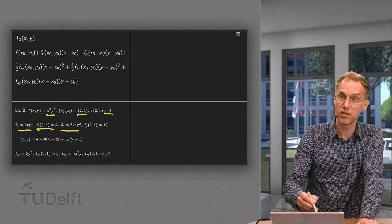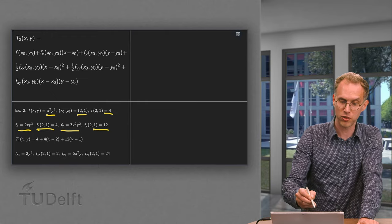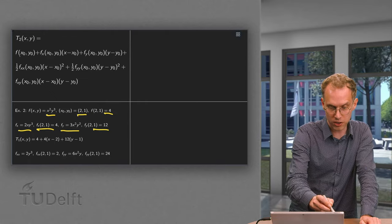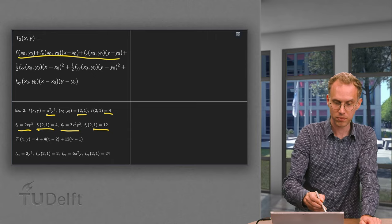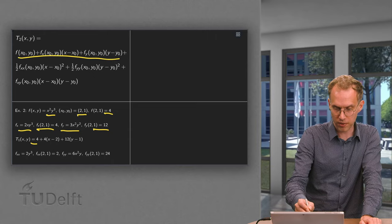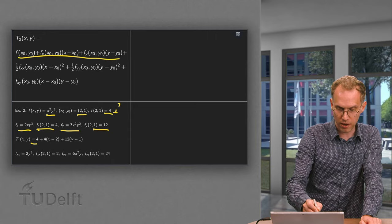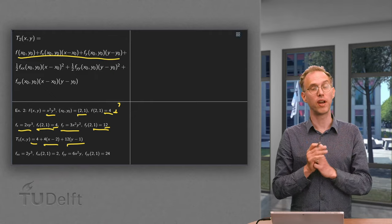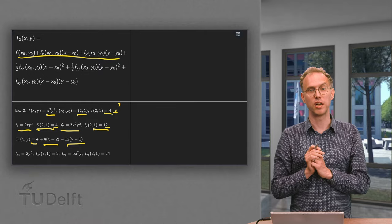We compute fy: 3x²y². In the point equals 12. And then we form the first Taylor polynomial, which is just this part over here: 4 plus 4 times (x - 2) plus 12 times (y - 1). So there we have the first order Taylor polynomial.